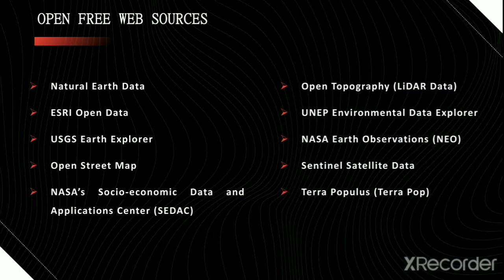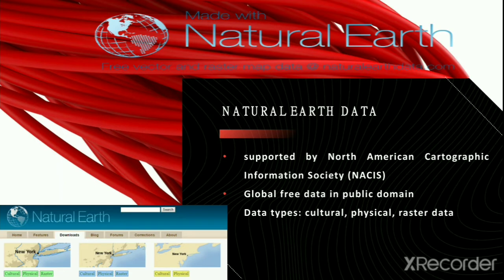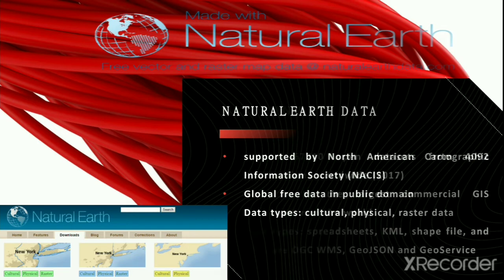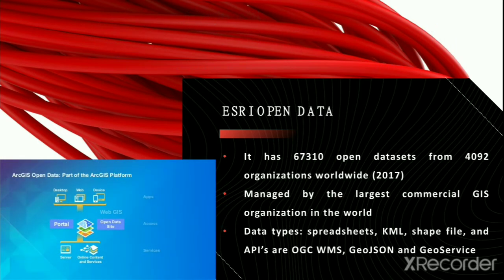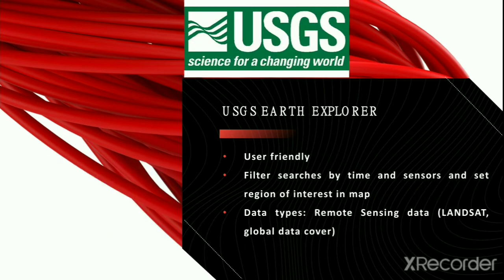Now let's look into some open free web sources available for spatial data. Natural Earth Data is supported by the North American Cartographic Information Society and is a global free dataset for public information, providing cultural, physical, and raster data free of charge. The ESRI Open Data has almost 67,000 open data sheets and 4,092 organizations around the world associated with it. It is managed by the largest commercial GIS organization in the world, and provides spreadsheets, KMLs, shapefiles, and other formats.